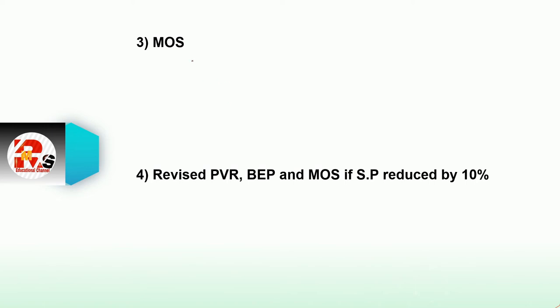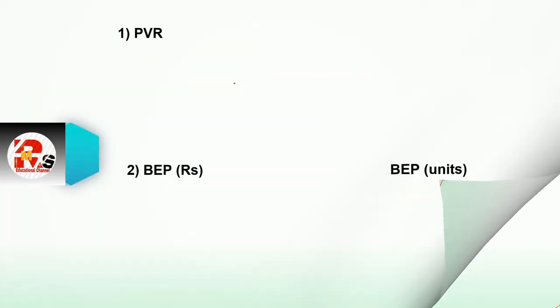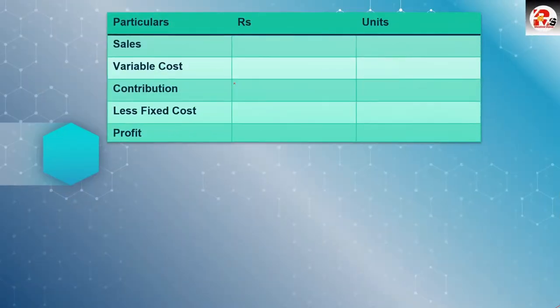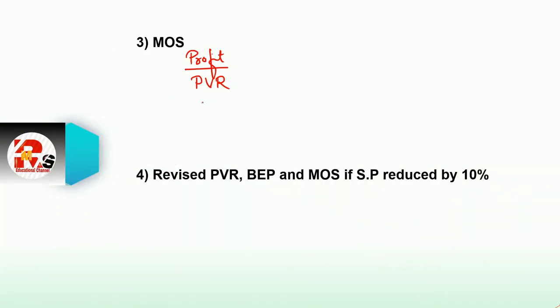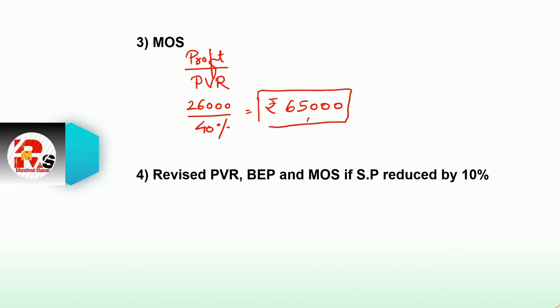Next is Margin of Safety. The shortcut formula for margin of safety is: Profit divided by PVR. Our profit is 26,000 and PVR is 40%. So Margin of Safety = 26,000 divided by 40% = 65,000. So 65,000 is the margin of safety. We have now calculated all the required figures.